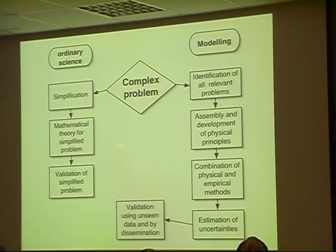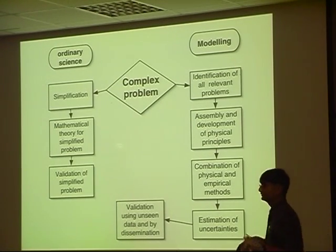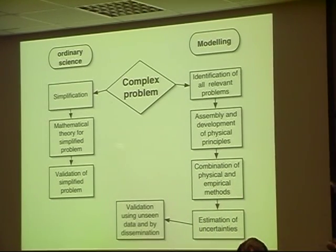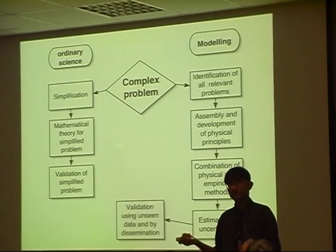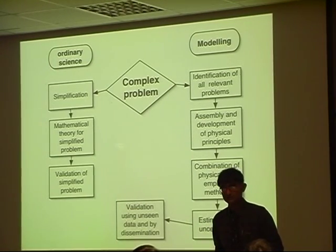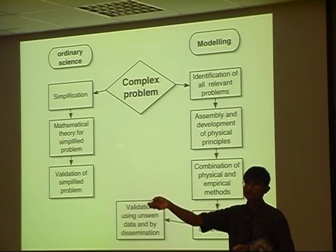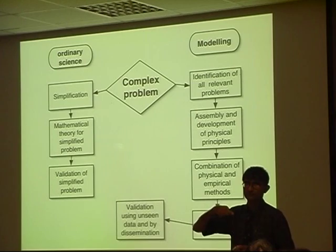Modeling, on the other hand, you have the complex problem. You identify all issues in it. You assemble a whole variety of tools. And you are not worried whether the tools are empirical or very rigorous. You want the tools to solve the problem. The problem without simplification. So, you combine physical and empirical methods. And when you do your calculation, you also give an estimate of uncertainty. And then, you validate in two ways. The first is by doing critical experiments. But the second is by making your tools available so that other people can test them in different circumstances. Because these are complicated models. And if they work in one part of the input space, they may not work in another part. So, if many people are using these tools, then they can find the problems associated with them.